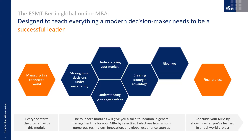We then have four core modules. We've created them so that they help you answer a pressing business issue — around decision-making, strategy, understanding your organization, and your market. These themes bring together three courses, so you will look at a business challenge from three different perspectives. We then have electives — your opportunity to really start tailoring the program to what you want. And as with all of our MBA programs, you have a capstone final project.